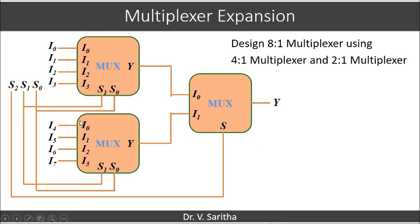So what happens here: when S2 equals 0, which is connected to the 2:1 multiplexer, it selects the first multiplexer as output of the 8:1 multiplexer. When S2 equals 0, depending upon the values of S1 and S0, i0, i1, i2, or i3 may be the output y.